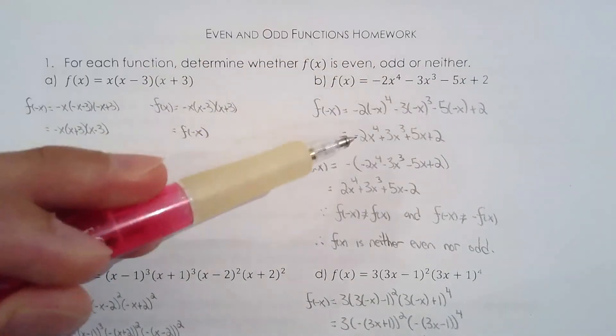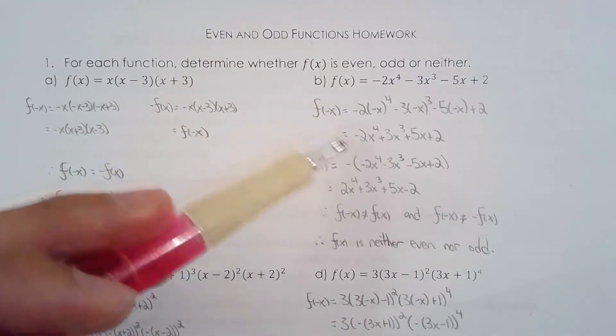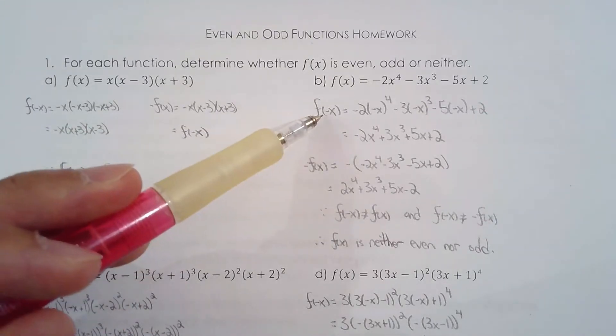So I find f of negative x, and then I see that it's not even, because f of negative x doesn't equal f of x.